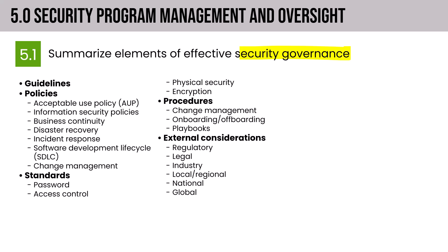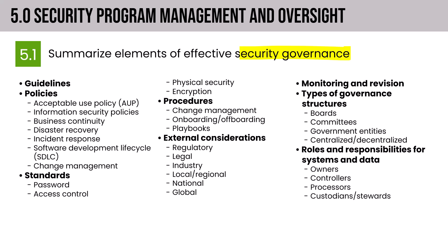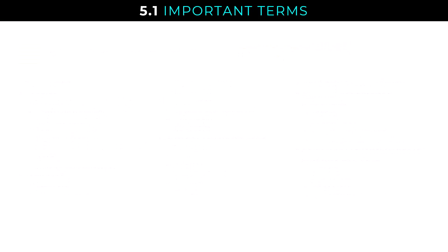We also have external considerations in our security governance, monitoring and revision — essentially monitoring our program efficacy and then revising as necessary. We'll look at types of governance structures and wrap with a look at roles and responsibilities for systems and data. It's really the data roles we'll want to focus on, and you'll want to understand who is responsible for what and which role is ultimately accountable. Let me start with a baseline definition of those four important terms.